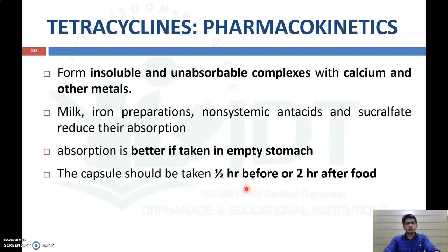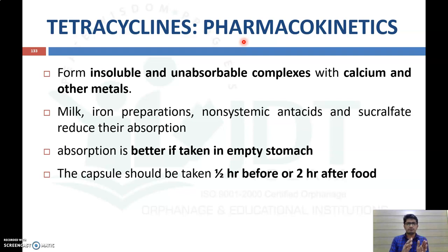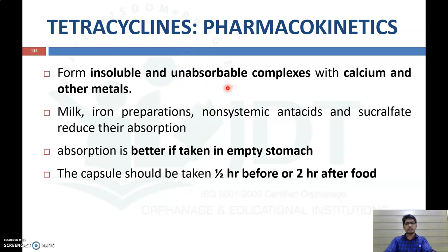Regarding pharmacokinetics, some important points must be noted. Tetracycline should not be given with any food material or substances that form an unabsorbable complex with calcium or other metals. It should not be given along with milk, iron preparations, non-systemic antacids, or similar preparations, because these reduce absorption by forming an insoluble, unabsorbable complex with calcium and other metals.